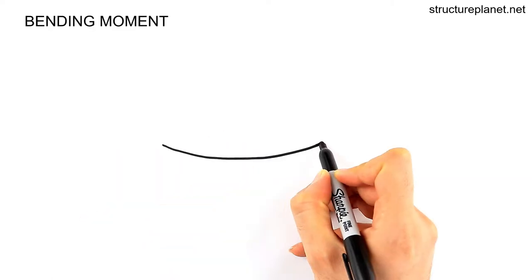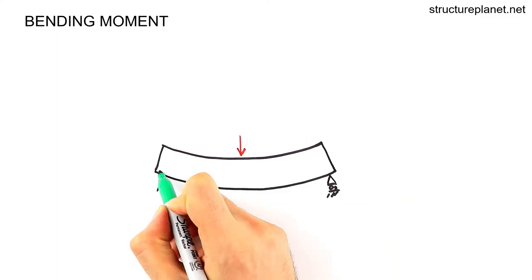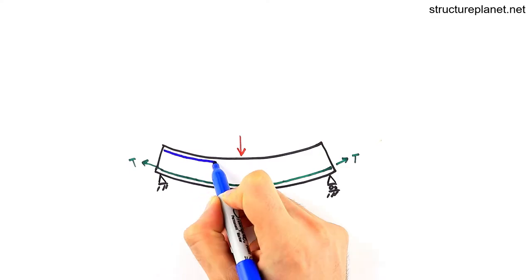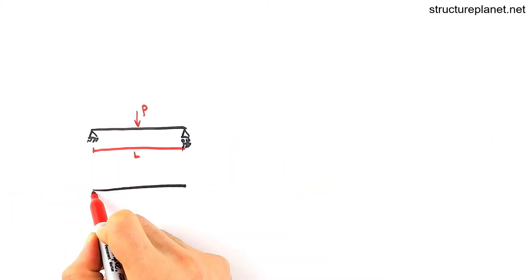Bending moment is produced when applied forces on an object causes it to bend, which is resisted by a coupled action between compression and tension forces inside the section. When an object bends, one face of the object goes into tension and gets longer, and the opposite face will go into compression and gets shorter.